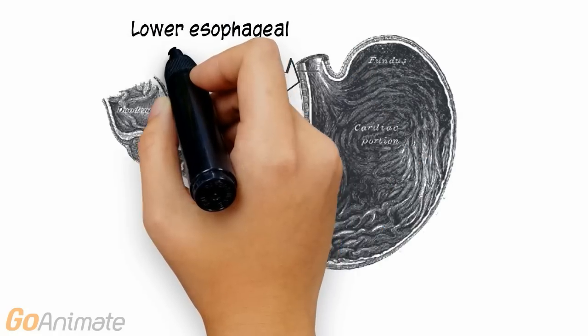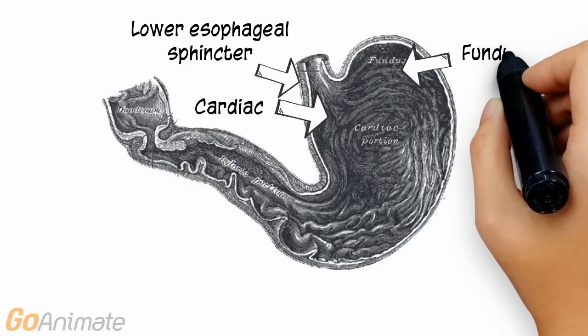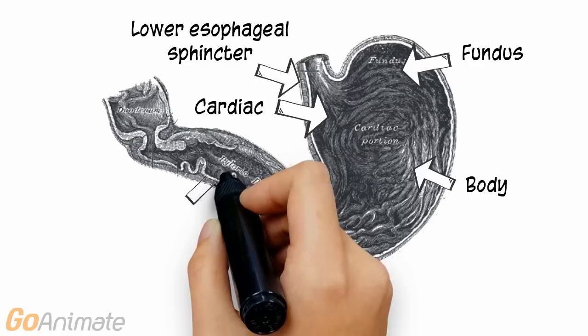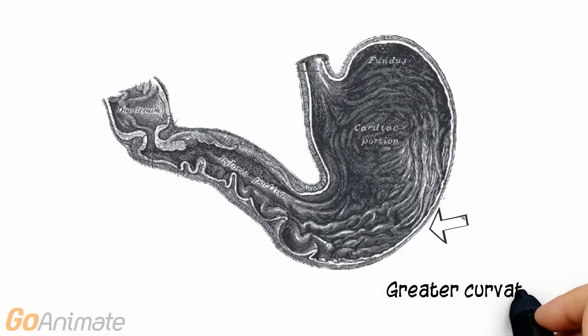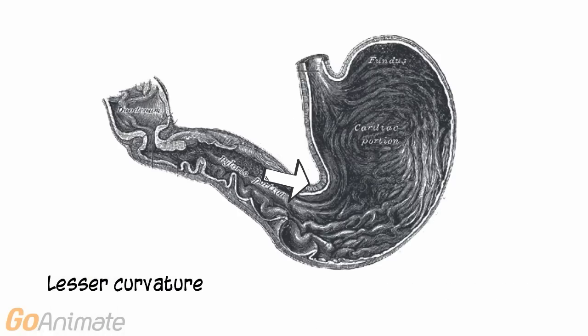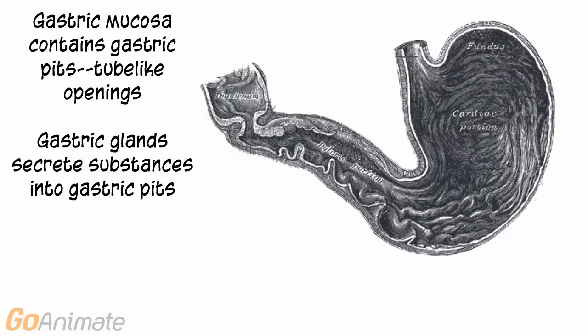The stomach consists of various parts. The first portion is called the cardiac region; here is the fundus, the large body, and the pylorus. The inside of the stomach consists of folds or rugae, which help to mix the food. The stomach also contains two curves: the greater curvature and the lesser curvature.